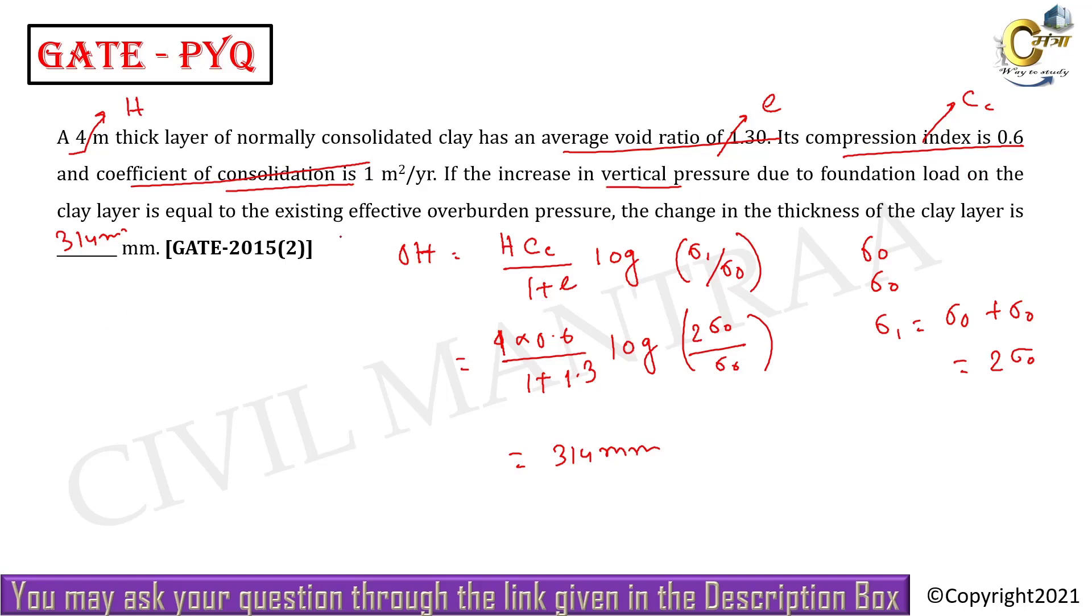So this you have to keep in mind, the trick of this question is that sigma_0 is not given to you, so how will you calculate? But it's nothing because sigma_0 by sigma_0 will cancel out and you can calculate the delta H. Thank you for watching.